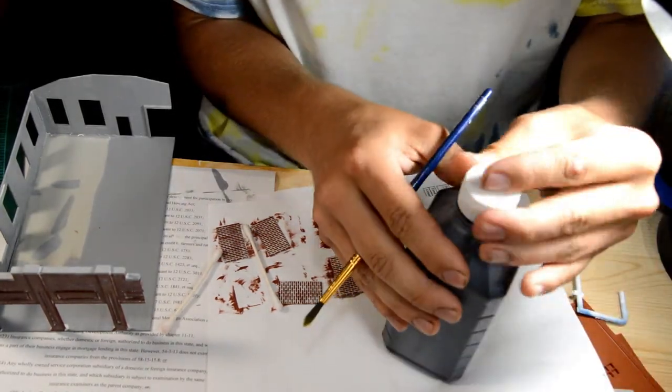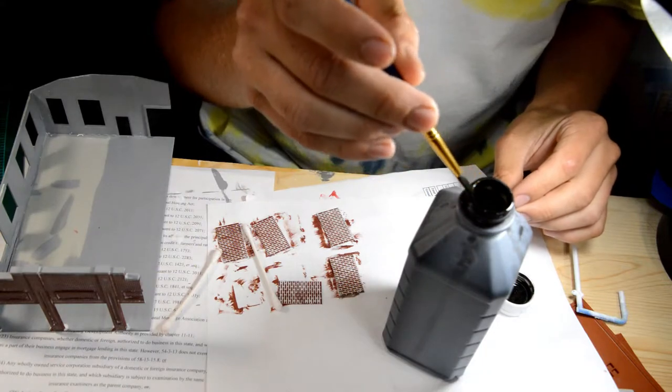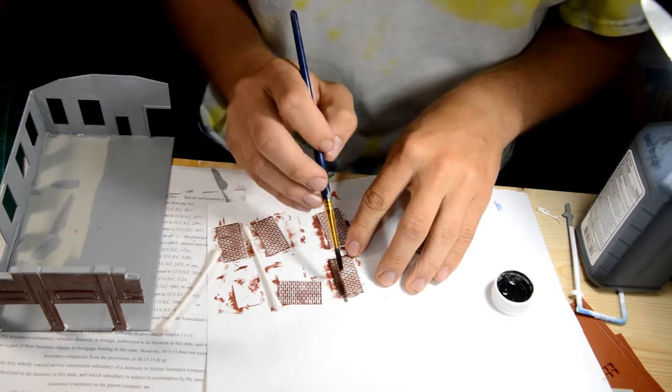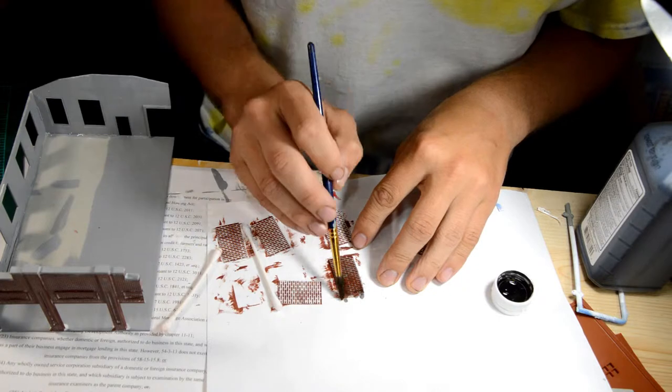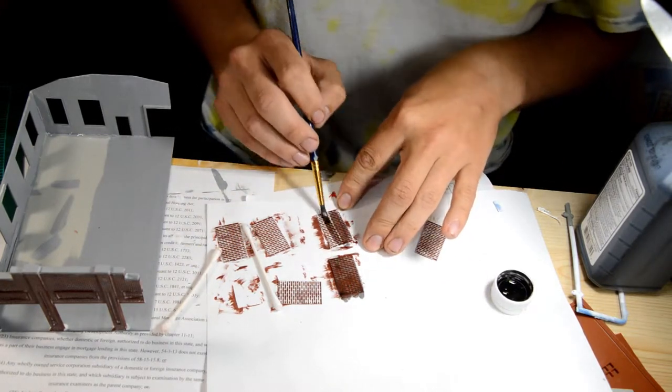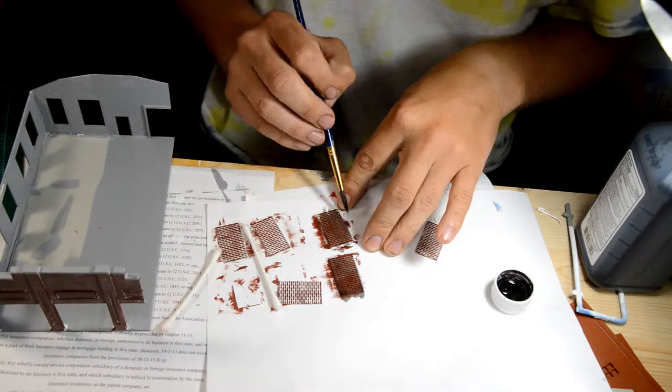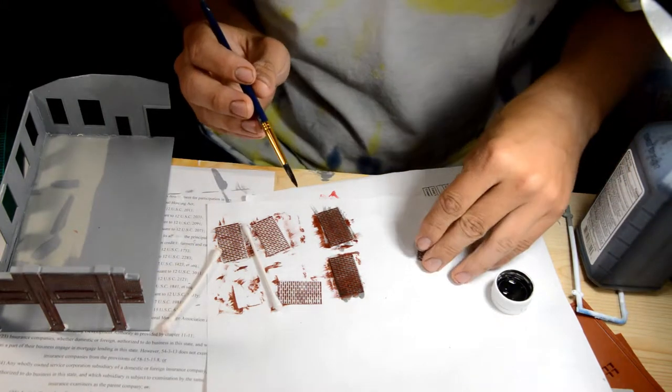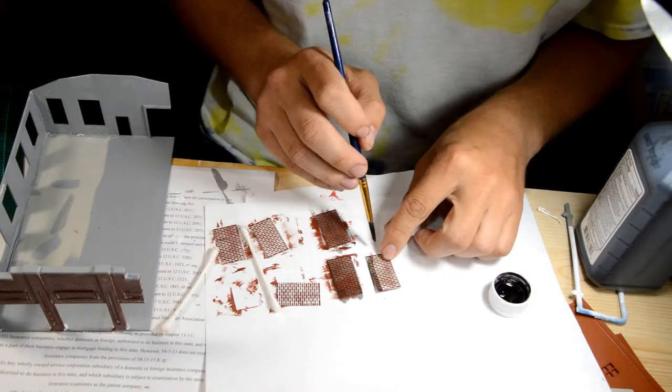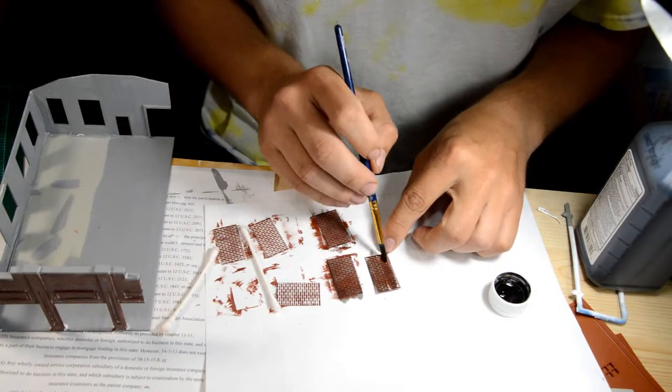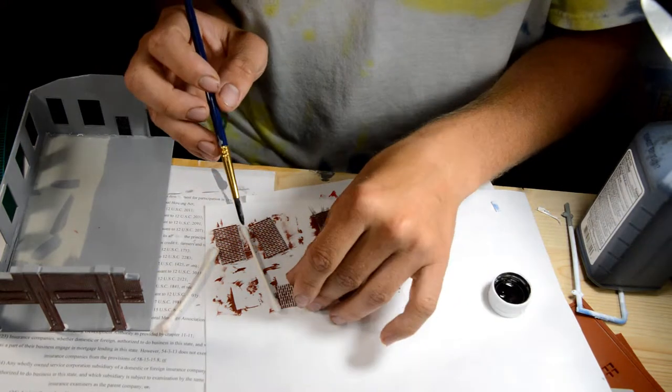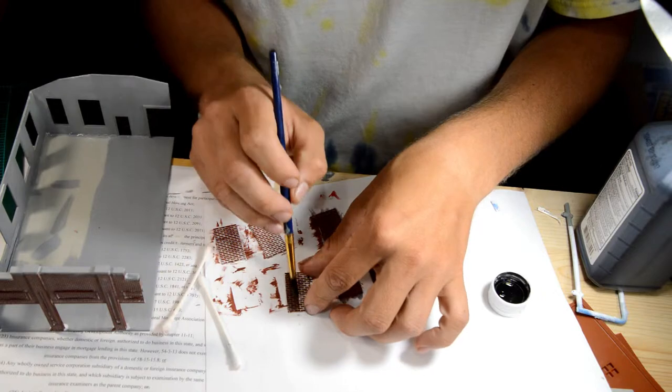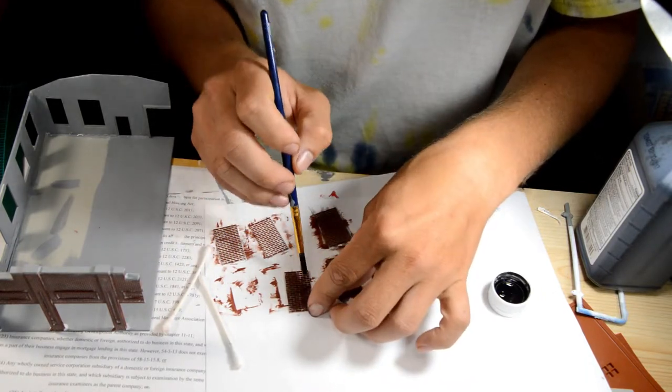Now, dip a brush in there, get it out of the light, and bring it down where the, so you want to bring it down with the rain, instead of go with the grain, go with the rain. So you can see how it darkens up the cement and it darkens up the paint.